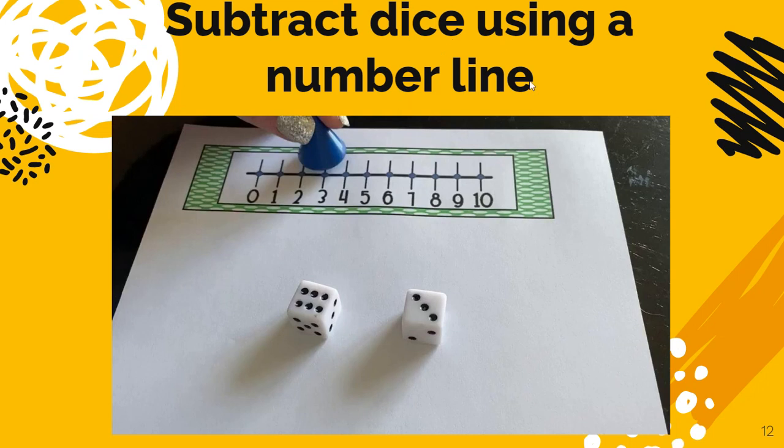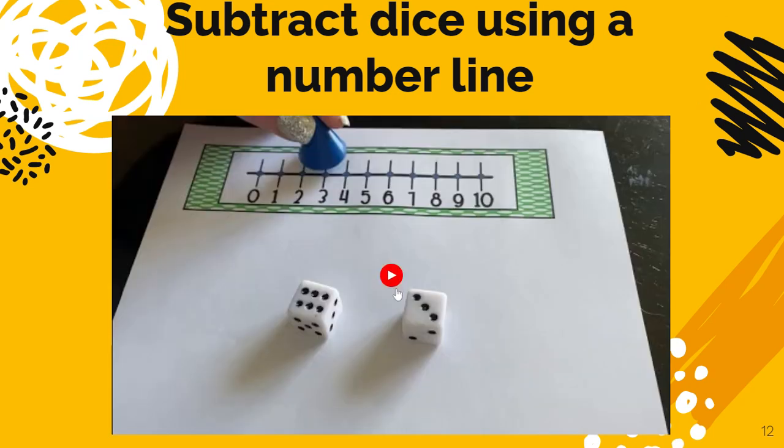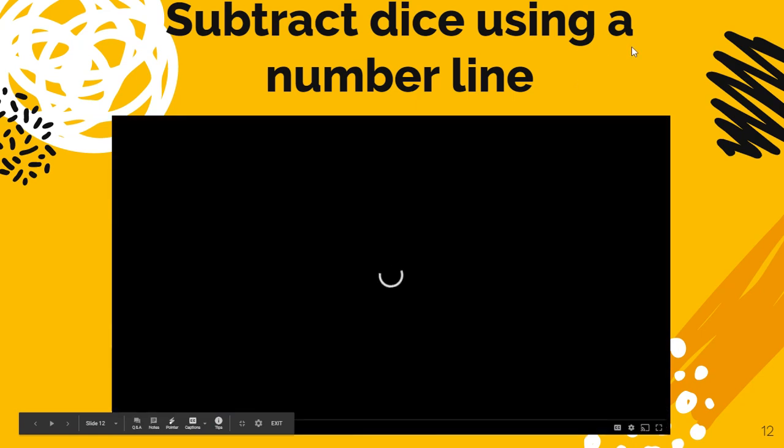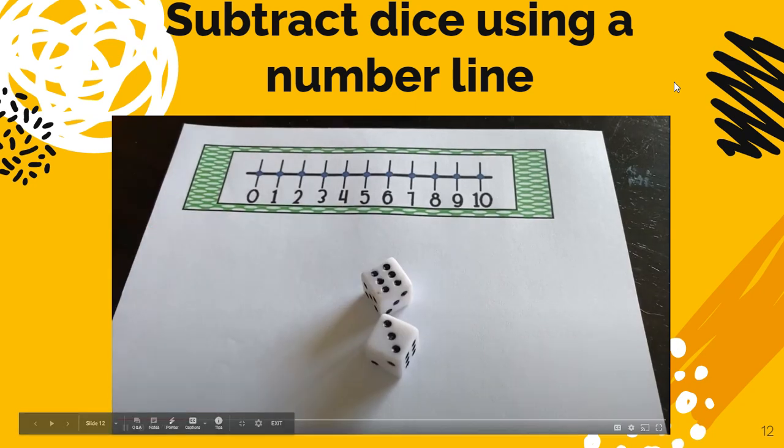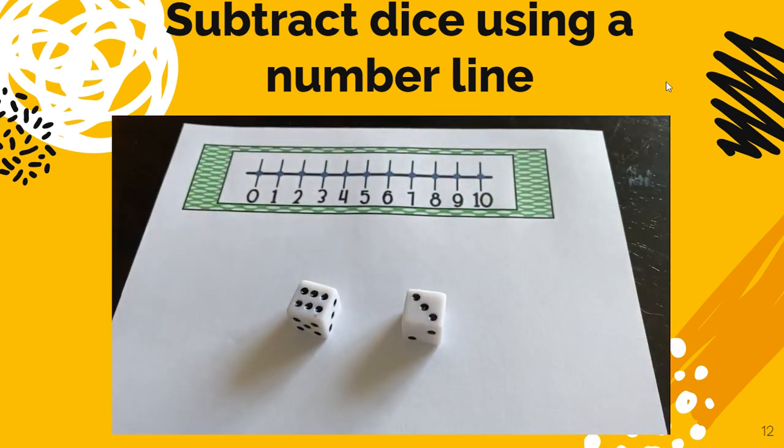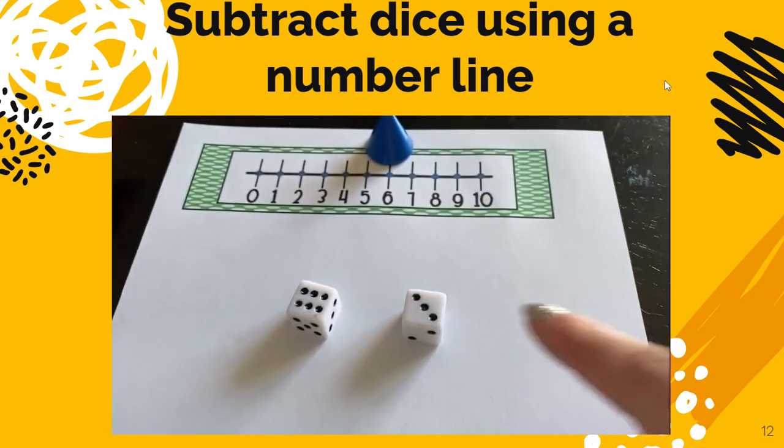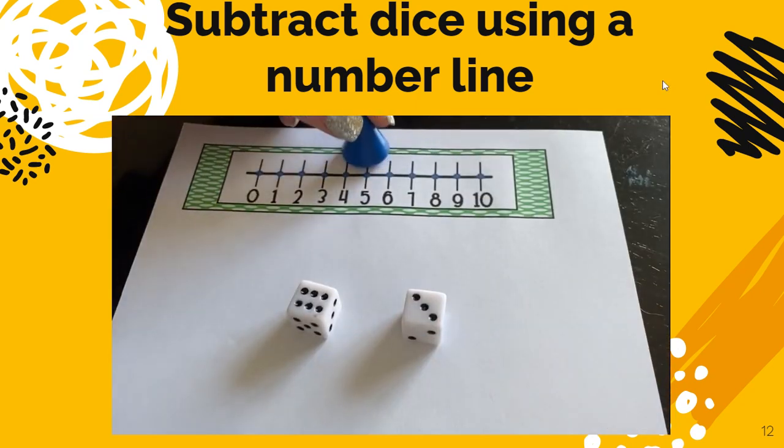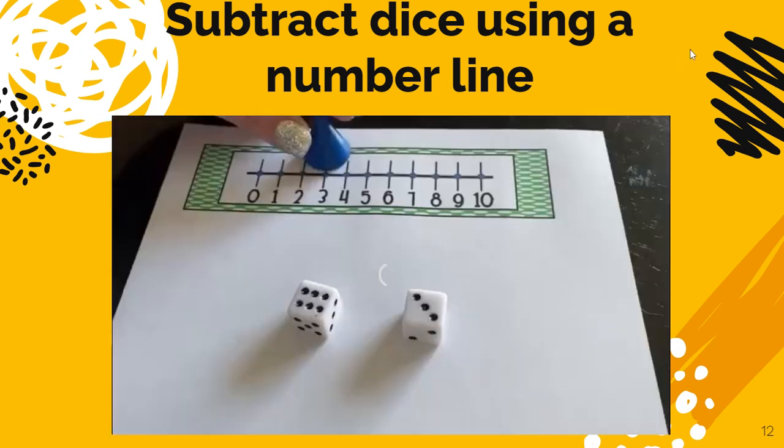So let's look at some different strategies using dice and subtraction. The first one we're going to look at is subtracting dice using a number line. So the first thing I do is I roll my dice and I have a 6 and a 3. So I'm going to put my marker on the 6 and then I'm going to jump backwards 3 because it's subtraction: 1, 2, 3. And I'm left standing on the 3. 6 minus 3 equals 3.